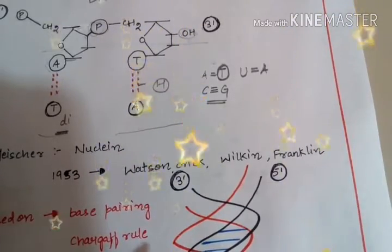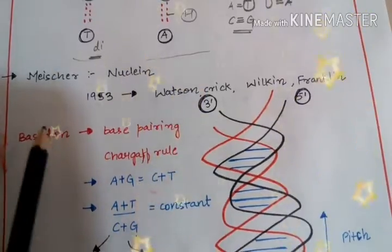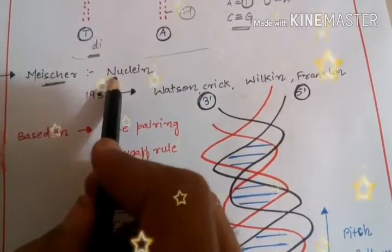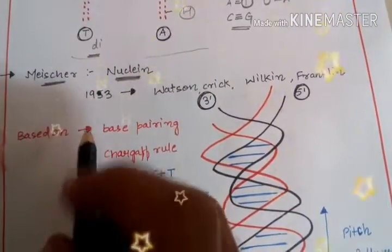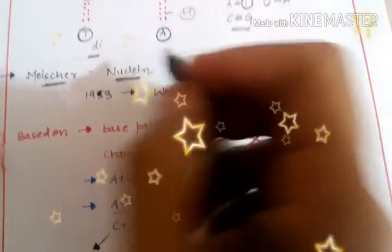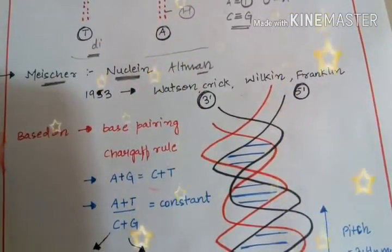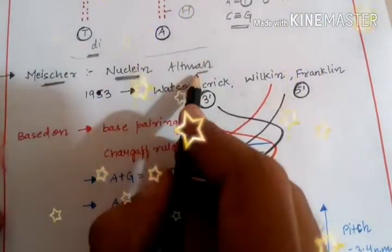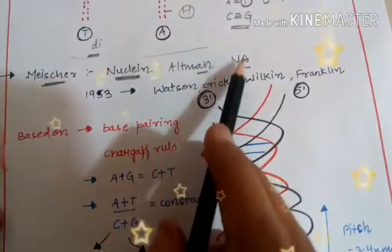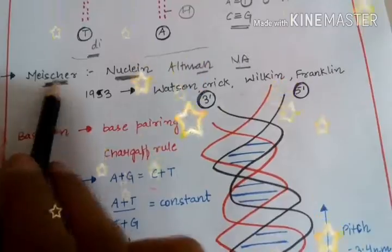So now we have to look at the discoveries of the genetic material, that is DNA. Frederick Mischer is a scientist who extracted the DNA but at that time he named it nuclein. Then comes a scientist, that is Altman. Altman has done some tests and he found that DNA is acidic in nature. That's why he named it nucleic acid.